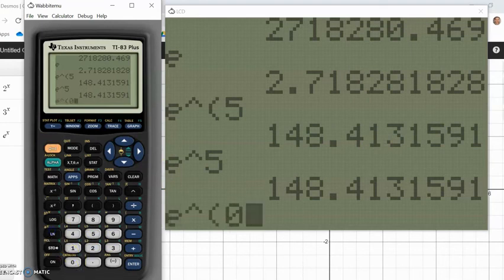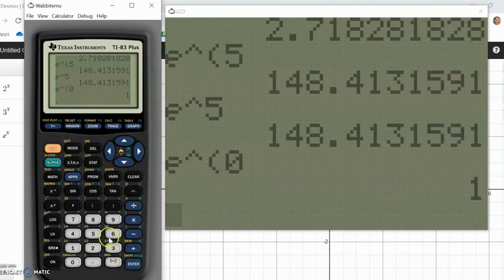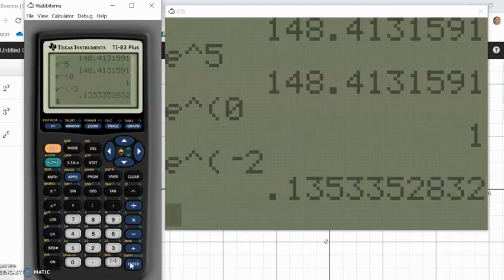Hey, real quick, what's e to the 0? Anything to the 0th power is 1. And we could go e to negative numbers too, right? And that would be some sort of decay. So expect that to be between 0 and 1.